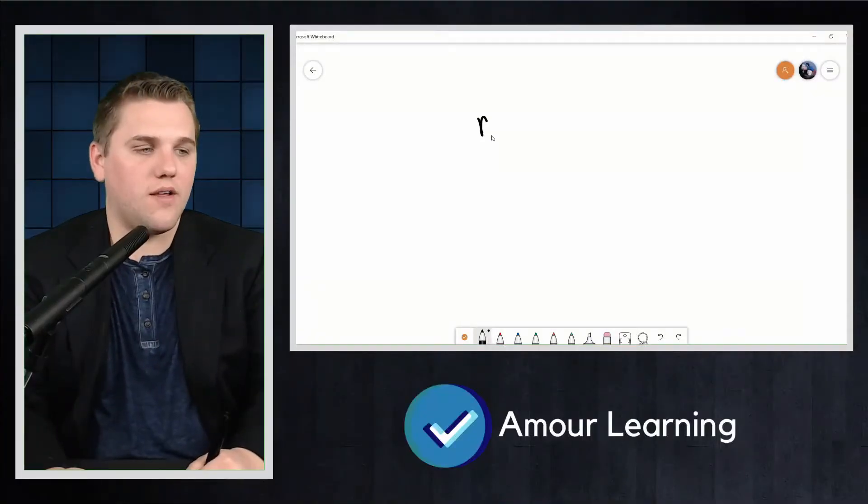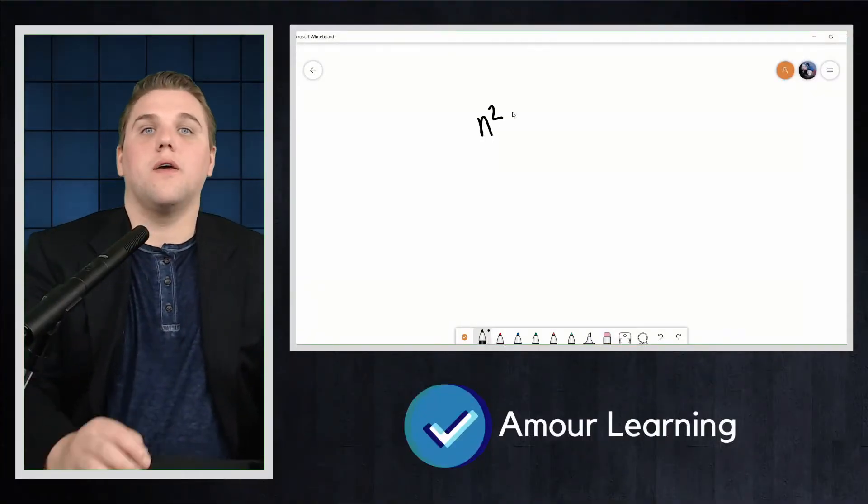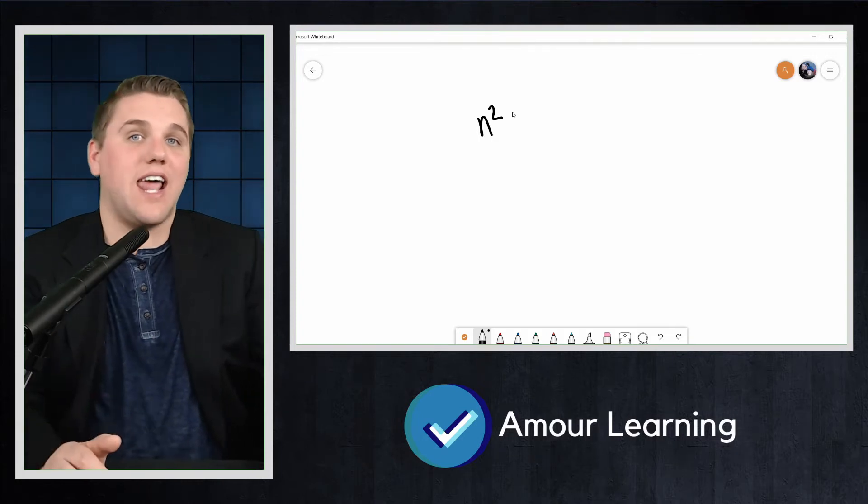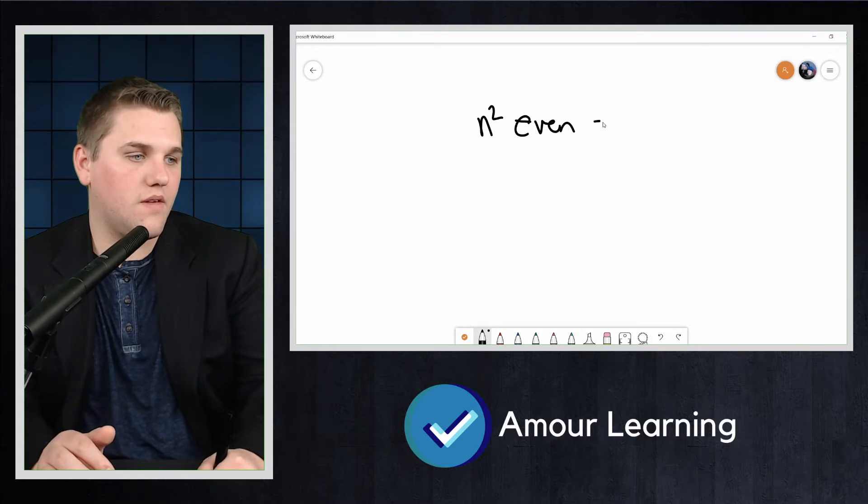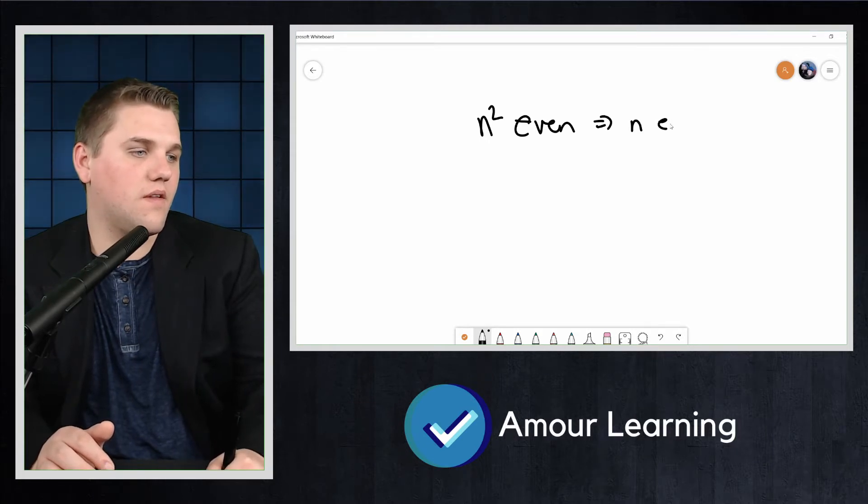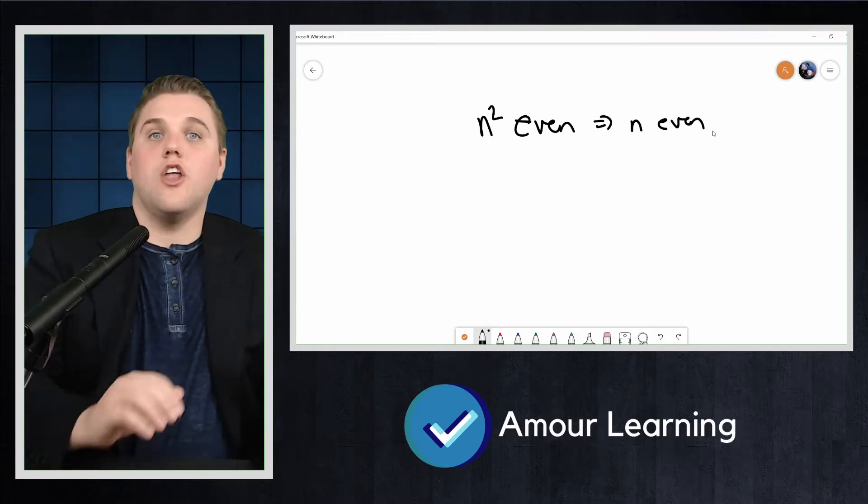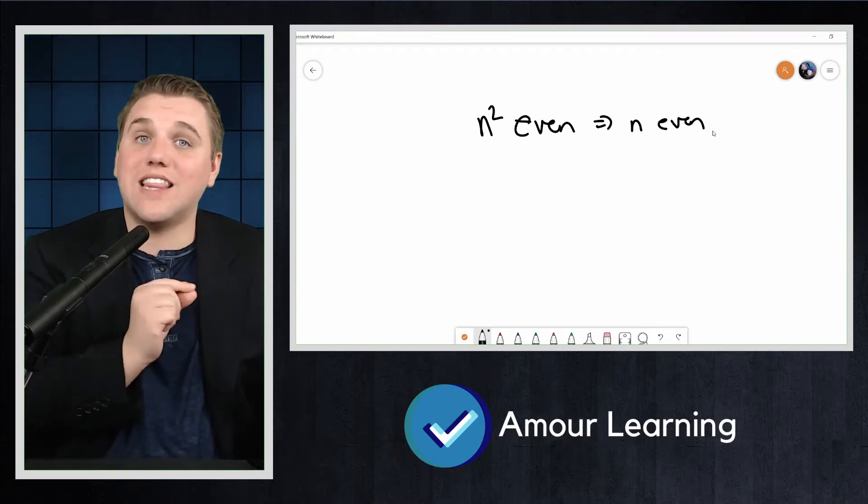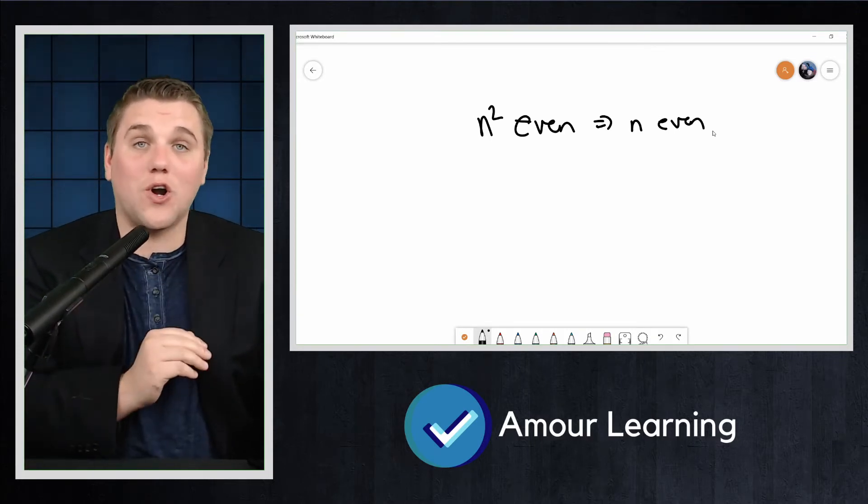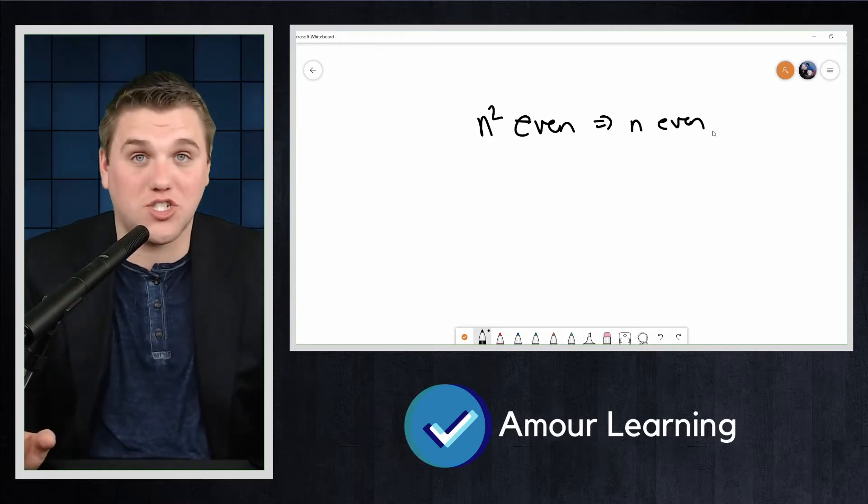We claim that n squared being even implies that n is even. No matter what integer n we pick, showing that this works for n equals 4 is not even close to enough.